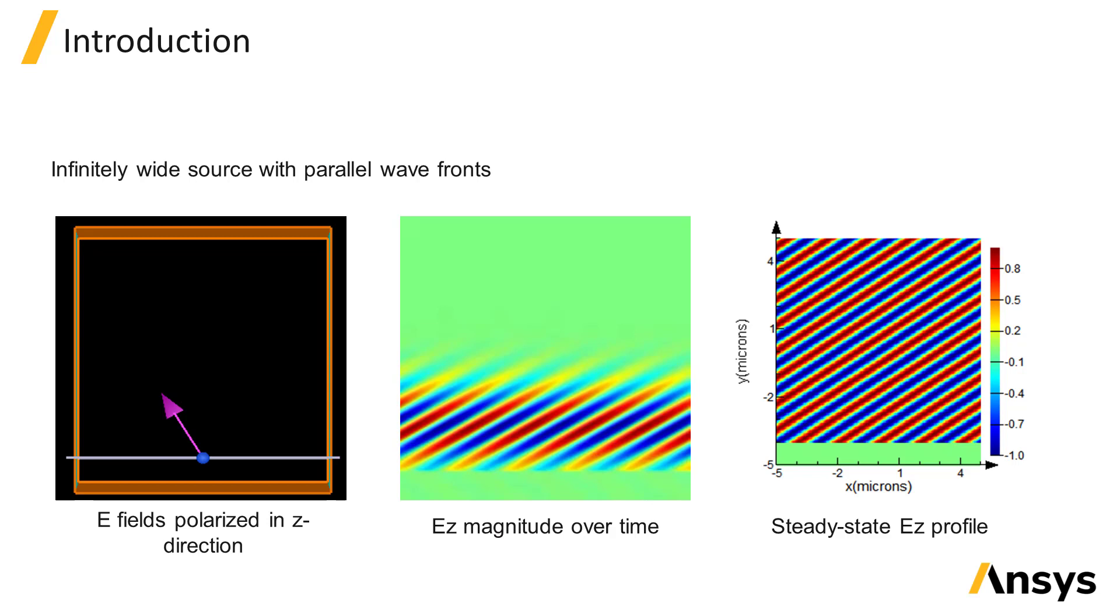There are several different types of sources which inject different source profiles. The plane wave source simulates a wave with parallel wave fronts where the phase is uniform across each wave front. This is the same type of source that we saw used in the My First Simulation section at the beginning of this course.